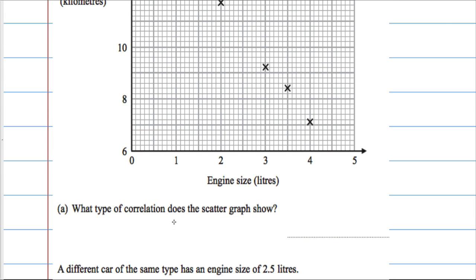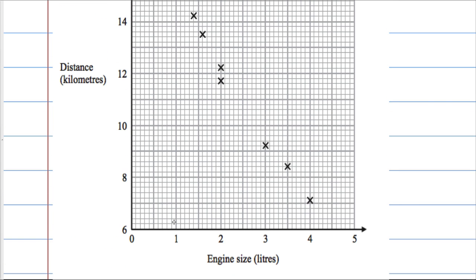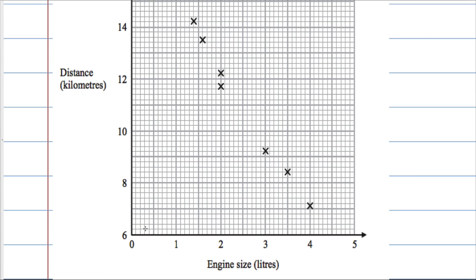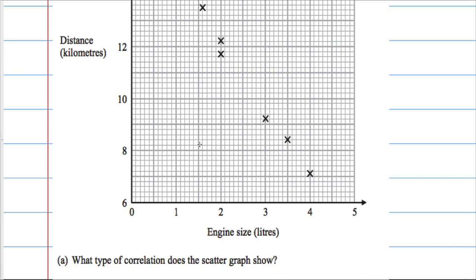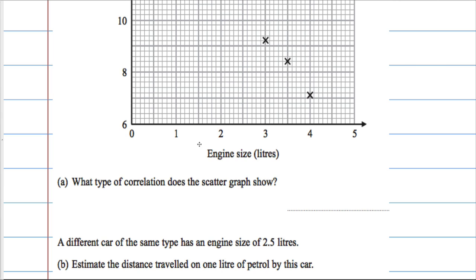We're asked what type of correlation does the scatter graph show. We can see as the engine size seems to increase, the distance the car can travel will decrease, which means that it's a negative correlation — as one thing goes up the other thing goes down.